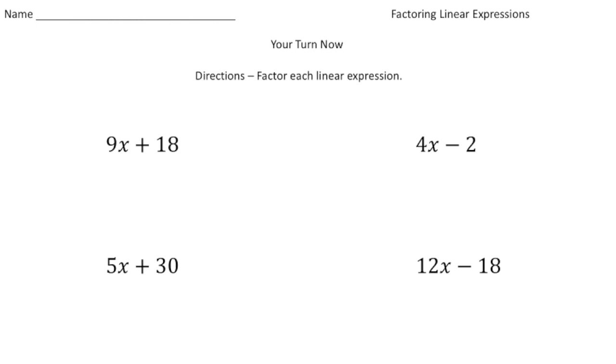Alright, welcome back. Let's see how I do these practice problems. So our first expression is 9x plus 18. So the greatest common factor of 9 and 18 is 9 itself. So it's going to be 9 times. I'm going to put a plus sign here. So 9 times x gives us 9x. And then 9 times 2 gives us 18. So it's going to be 9 times x plus 2.